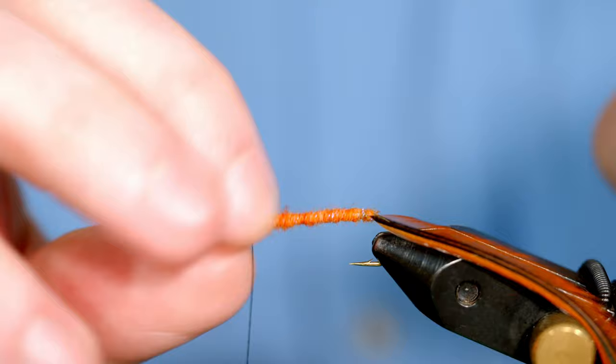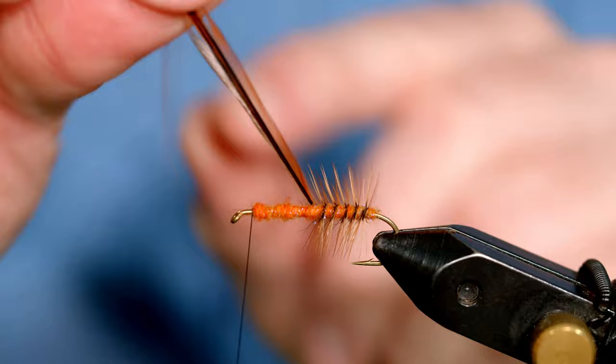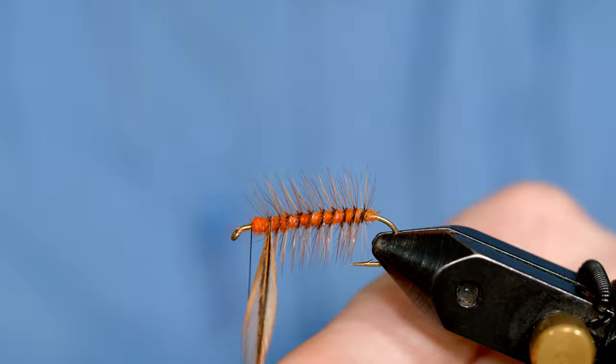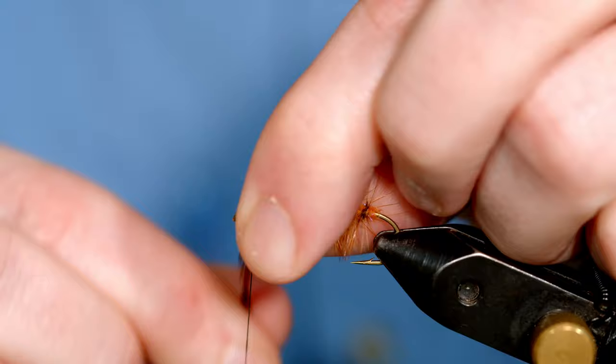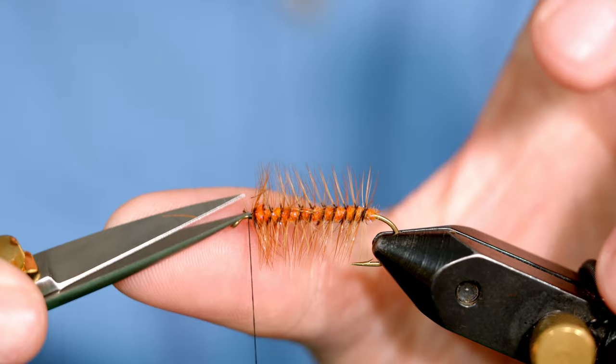And we're going to just palmer wrap the hackle, leaving a space in between each wrap so that the body does come through. If you don't have a brown hackle, you can use a grizzly hackle. I like how the brown goes well with the orange.